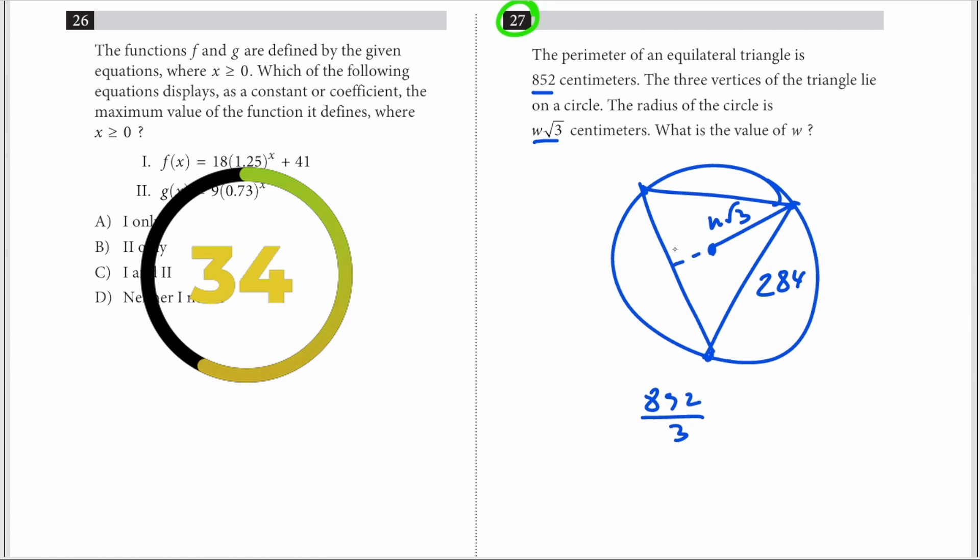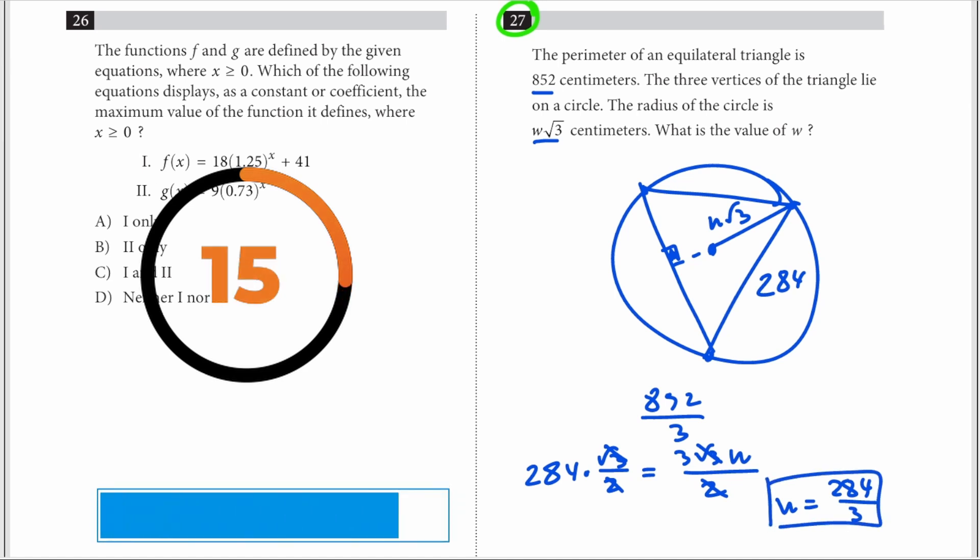Now, if you extend this out, you're going to get the right triangle. Therefore, 284 times √3 over 2 is equal to 3√3w over 2. Cancel this out, cancel this out, and you have w is equal to 284 over 3.